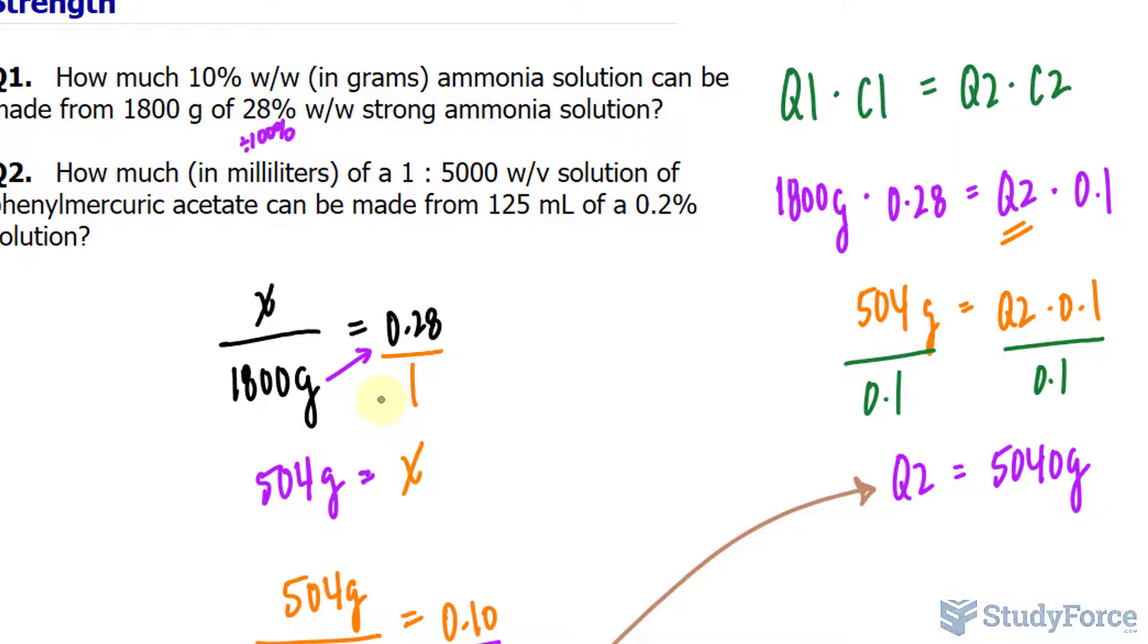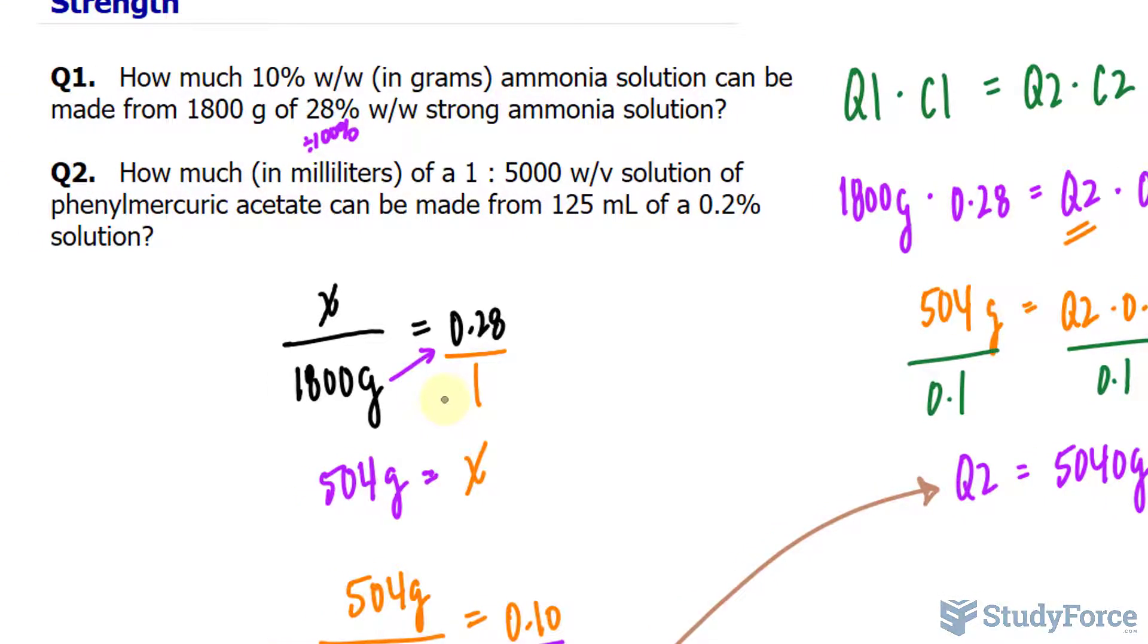In question number two, how much in milliliters of a 1 to 5,000 weight per volume solution of phenyl mercuric acetate can be made from 125 milliliters of a 0.2% solution? So this is our stock solution.